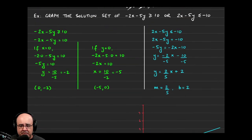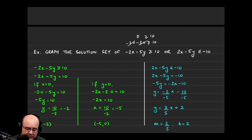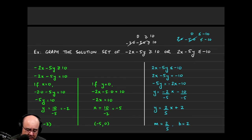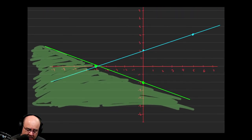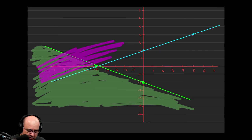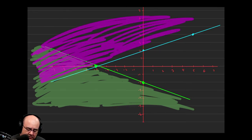The origin doesn't pass through the blue line either, so we can use it as a test point there too. Plugging in: 2 times 0 minus 5 times 0 is less than or equal to negative 10. That simplifies to 0 is less than or equal to negative 10, which is also a false statement — 0 is greater than negative 10. Because the origin told us a lie again, we shade on the other side of the origin with respect to the blue line — everything above and to the left of it.